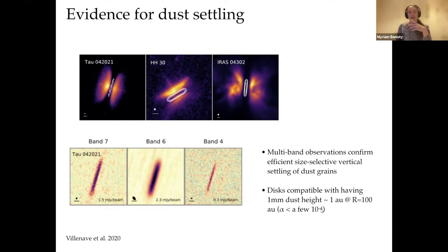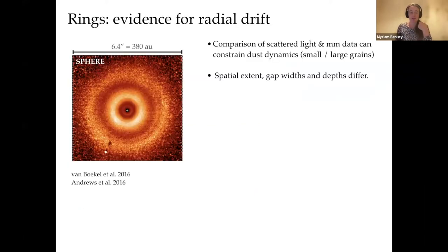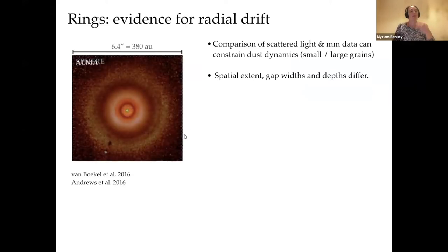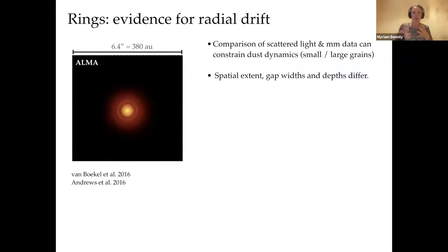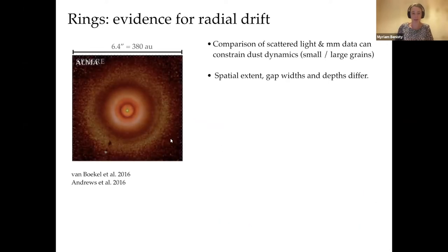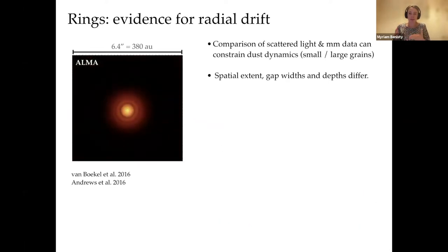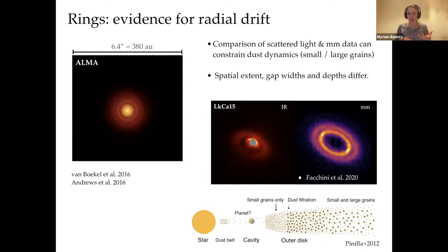In the radial direction, we also have evidence for efficient radial drift. Combining scattered light observations of small grains, the disk of TW Hydra is quite extended — but in the centimeter, all the large grains have drifted inward and are contained in a much smaller region. Also, the gap widths, gap location, and depth differ between small and large grains, and we interpret this as resulting from interaction with a planet under assumed viscosity and specific disk conditions.